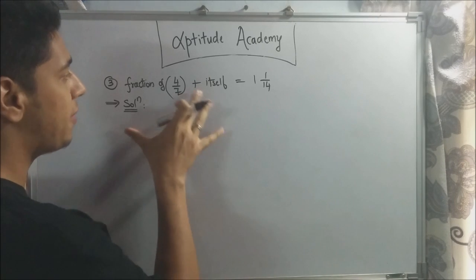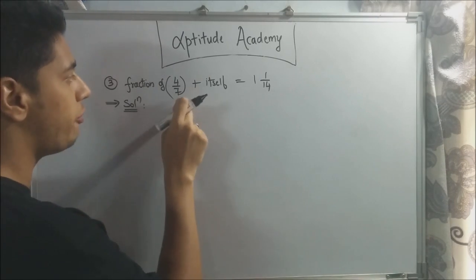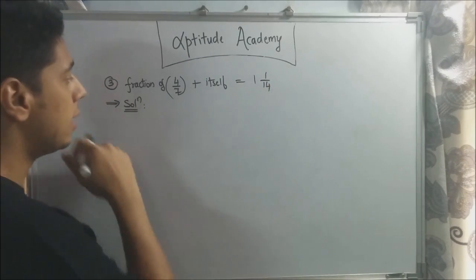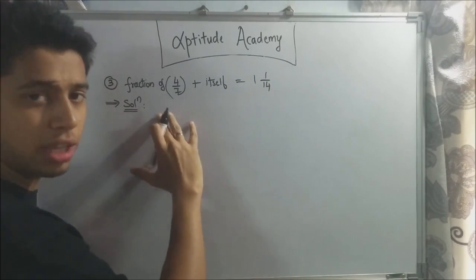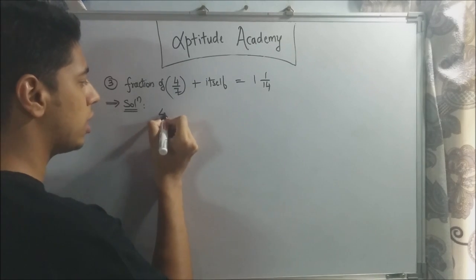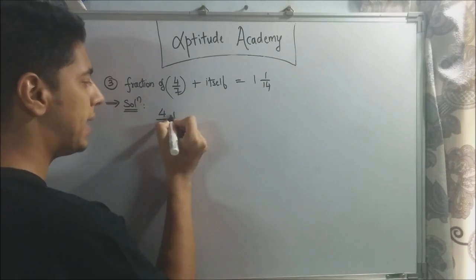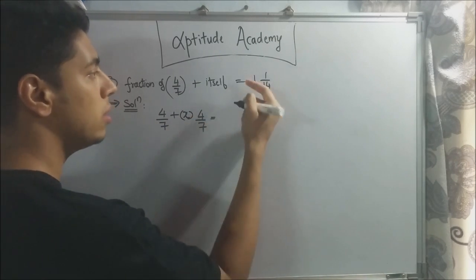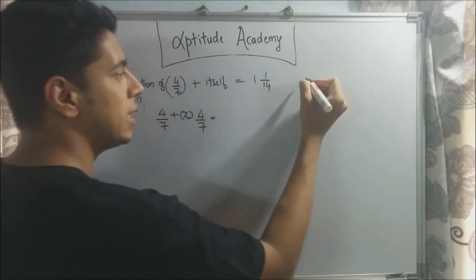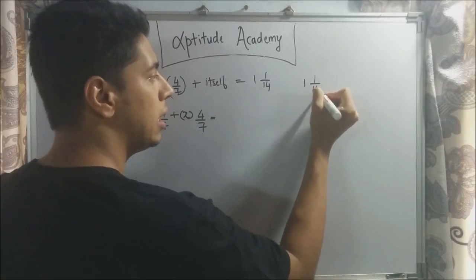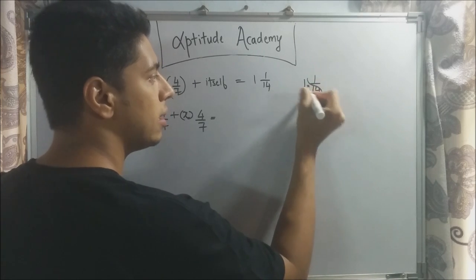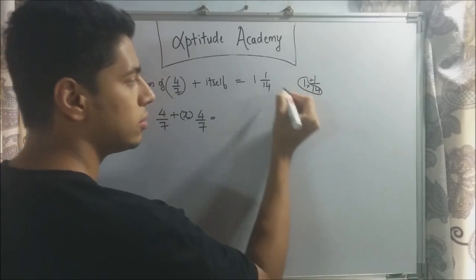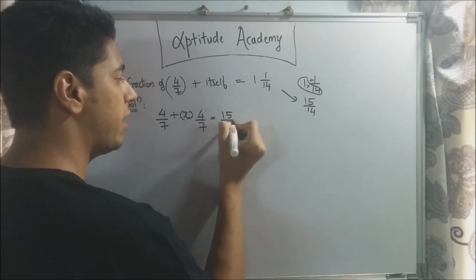Now the third sum, what they've said is they've asked you to find out what fraction of 4 by 7, when added to itself, will give you 1 and 1 by 14. Now, you need to write the equation. The equation is super simple. So itself is 4 by 7. So the equation will be 4 by 7 plus some fraction x into 4 by 7 will be equal to a mixed fraction of 1 and 1 by 14. Now, a mixed fraction, how do you do it? 1 and 1 by 14 will be, you multiply these two, then you add it with this. So 1 into 14 plus 1 is 15 by 14. So this is what this is equal to, so you write 15 by 14.